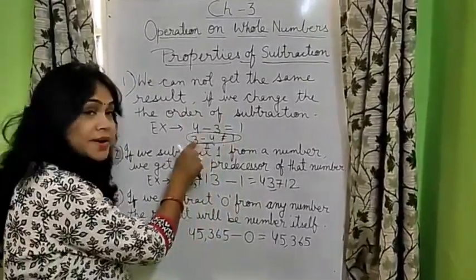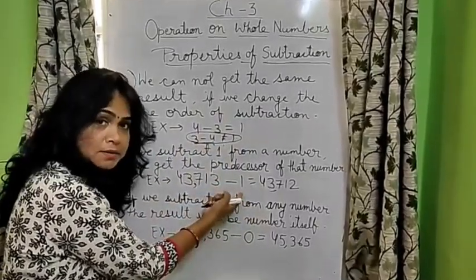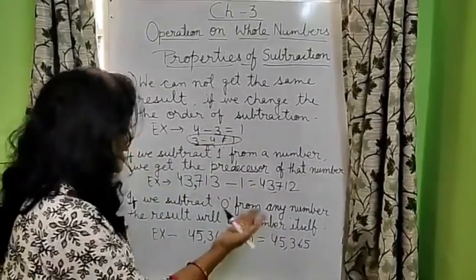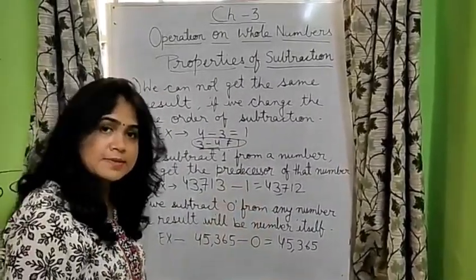That we cannot change the order. That if we subtract 1 from any number, we get the predecessor. And we subtract 0 from any number, we get the number itself.